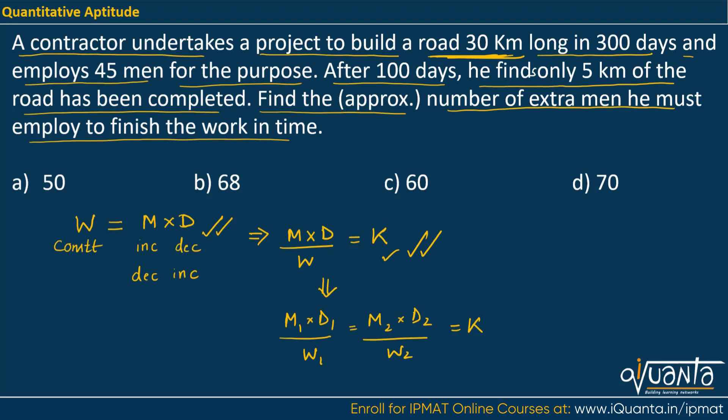Now in the first case, the number of men employed was 45. They were working for 100 days and they could complete only 5 kilometer of the road. Now, in the second case, the number of men has to be increased, we have to employ some extra men. So let us assume that total men employed to build the remaining road is, 5 kilometer has been built, we had to build 30 kilometers. So 25 remains. So 25 kilometer of road remains that will be the work. Men, let us assume that X men were employed and for how many days since 100 days have been consumed and we initially wanted to complete the work in 300 days. So 200 days are still remaining.